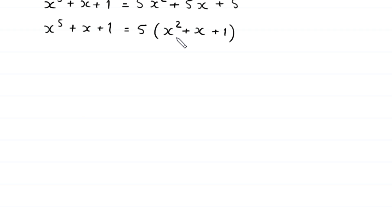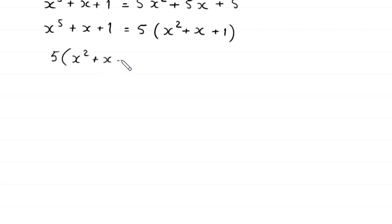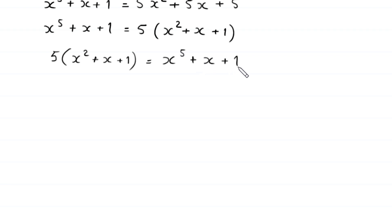We rewrite this so that 5(x² + x + 1) is on the left and x⁵ + x + 1 is on the right. So: 5(x² + x + 1) = x⁵ + x + 1.